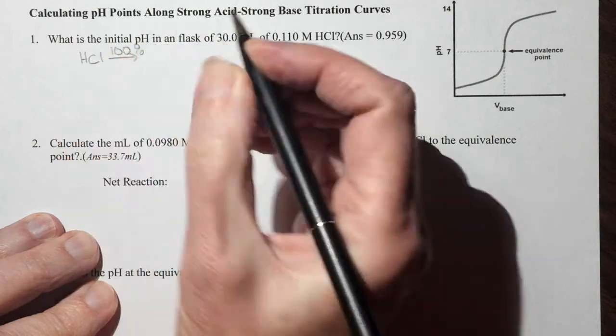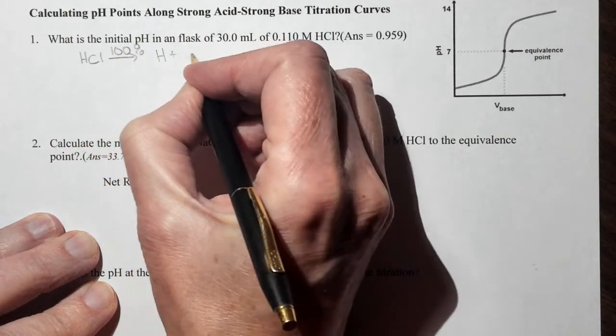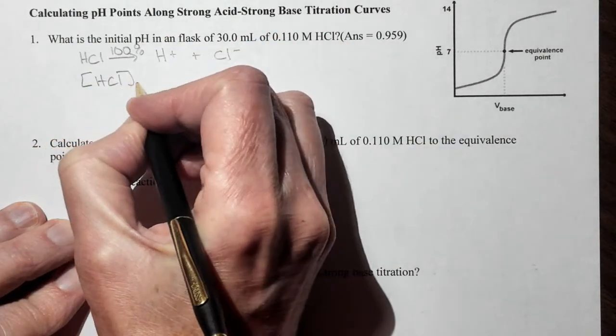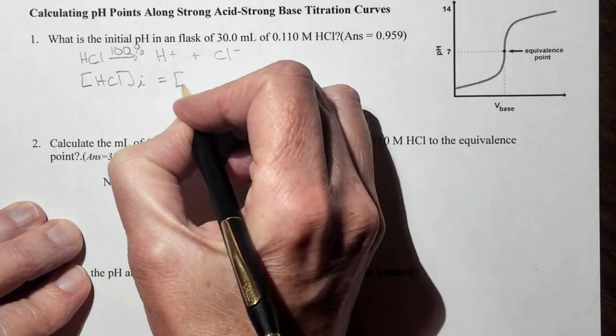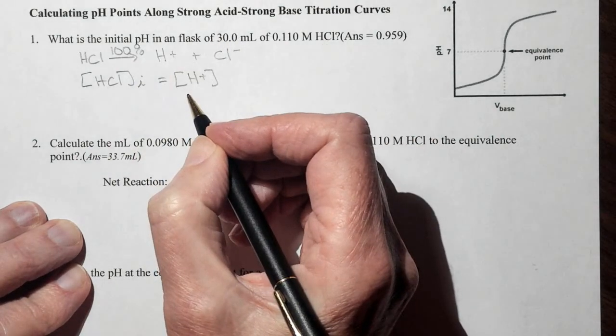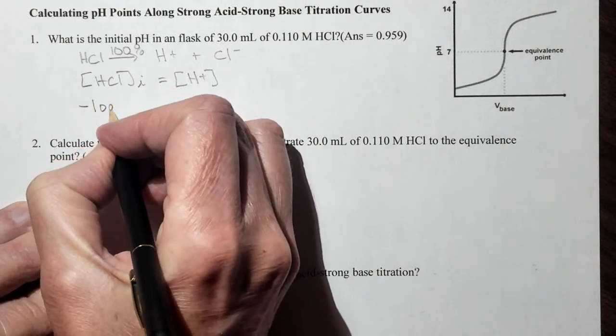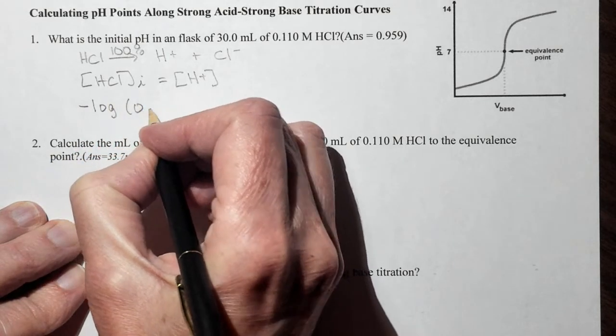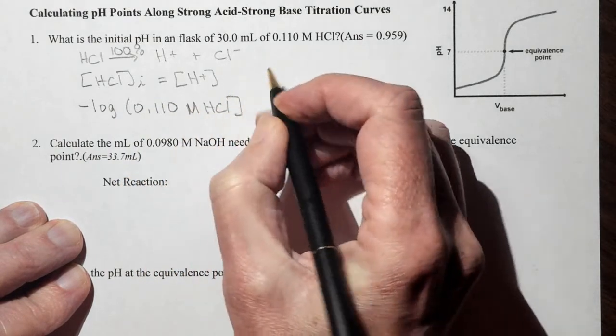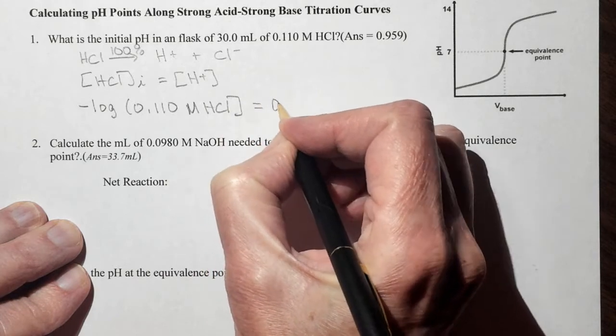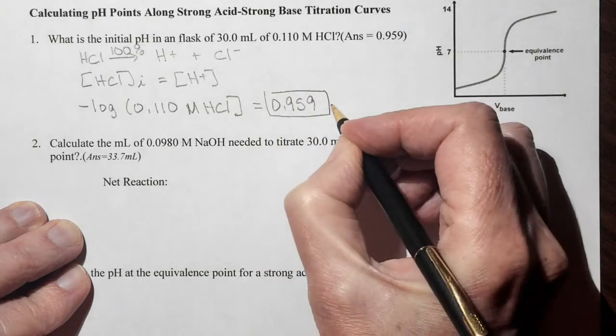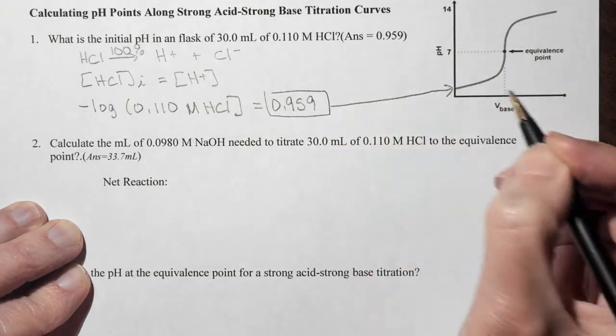So it is going to 100% dissociate to H+, plus Cl-. This means that our initial concentration of HCl is going to be equal to our hydrogen ion concentration. And so we just take the negative log of 0.110 molar HCl. And our answer is that our initial pH is going to be 0.959. And so this value matches our initial pH.